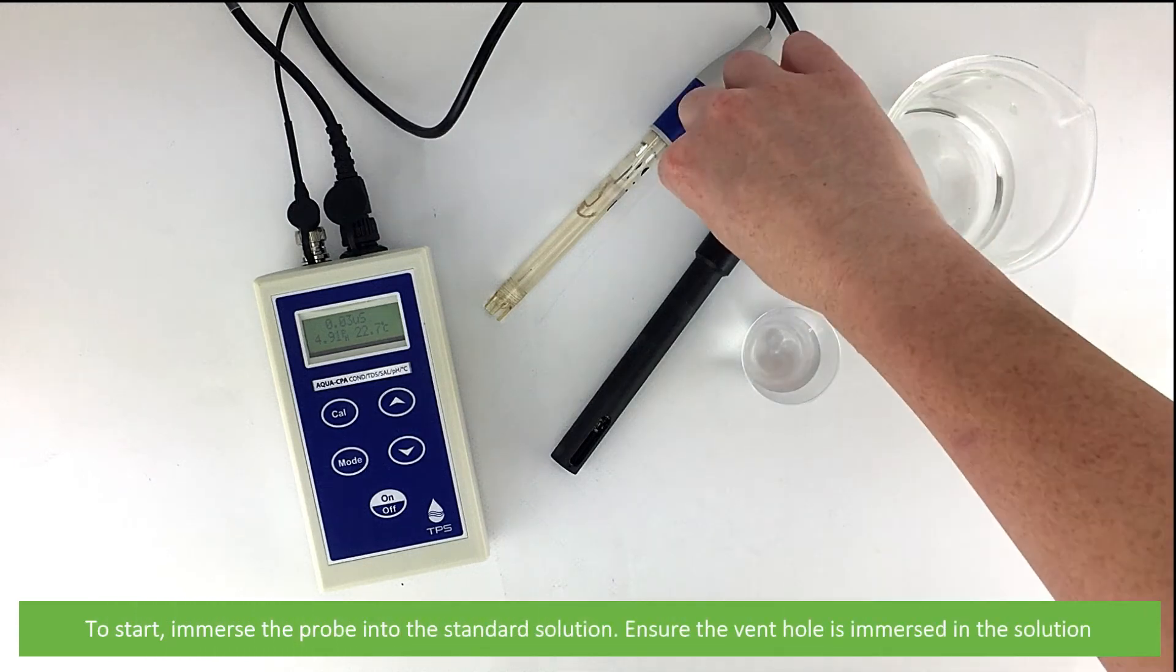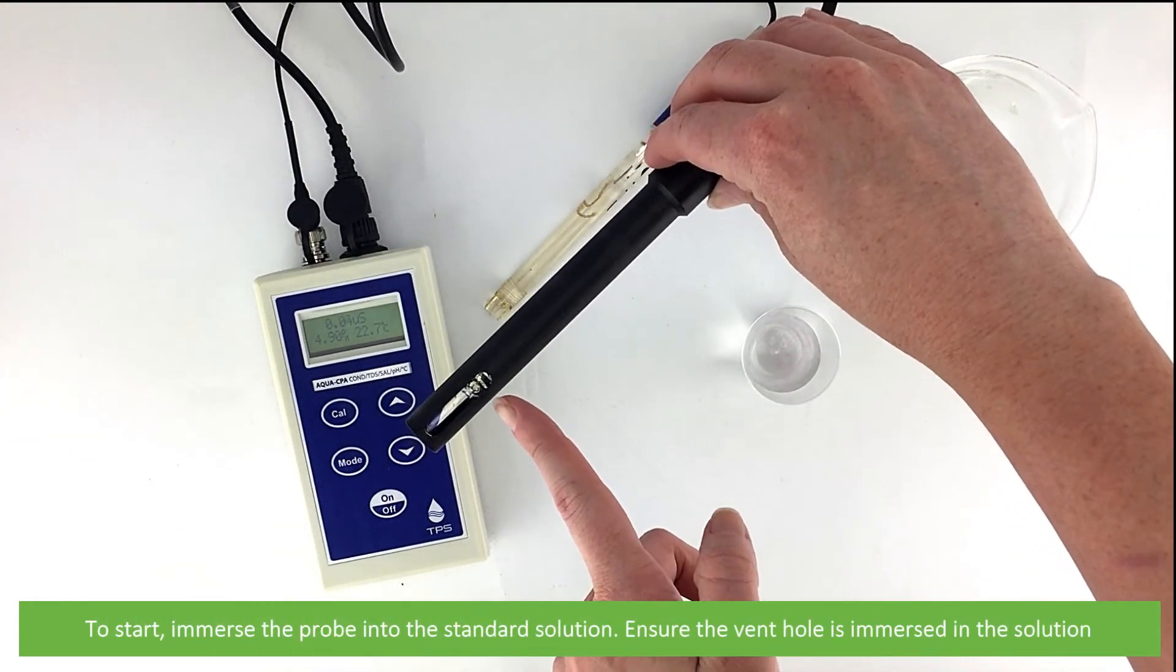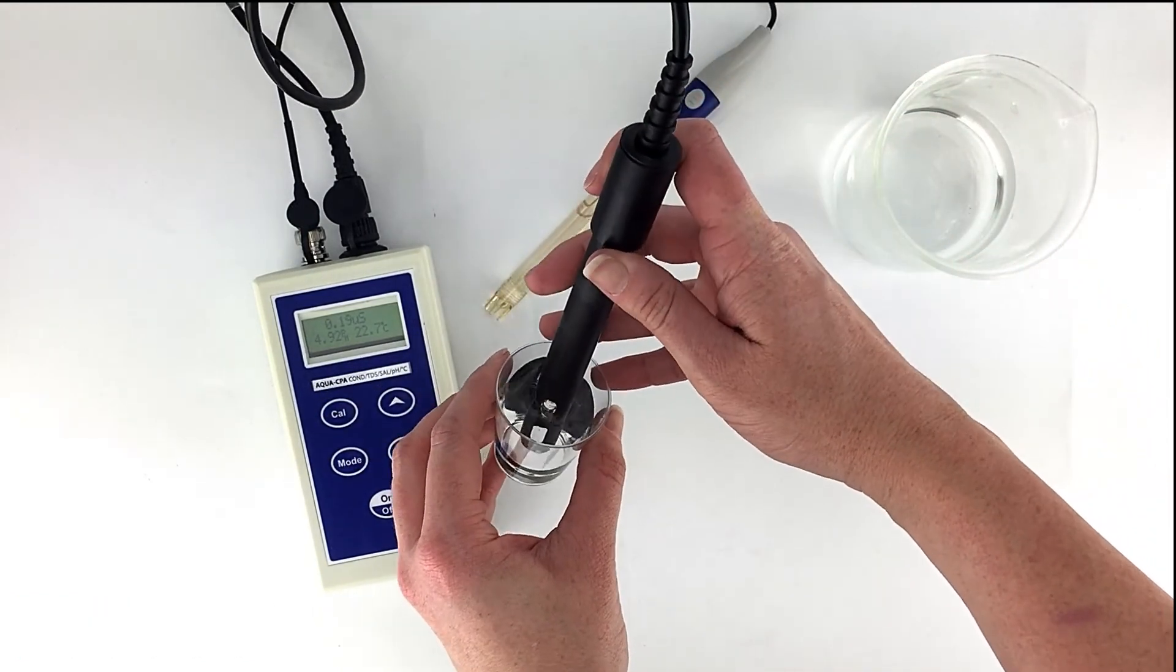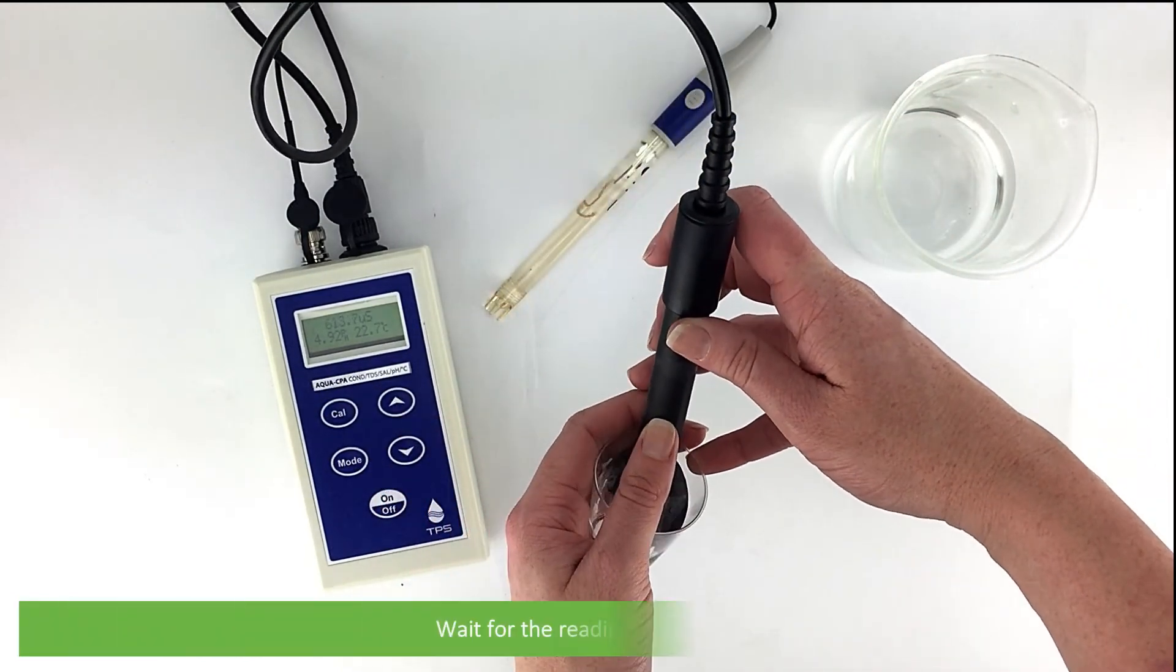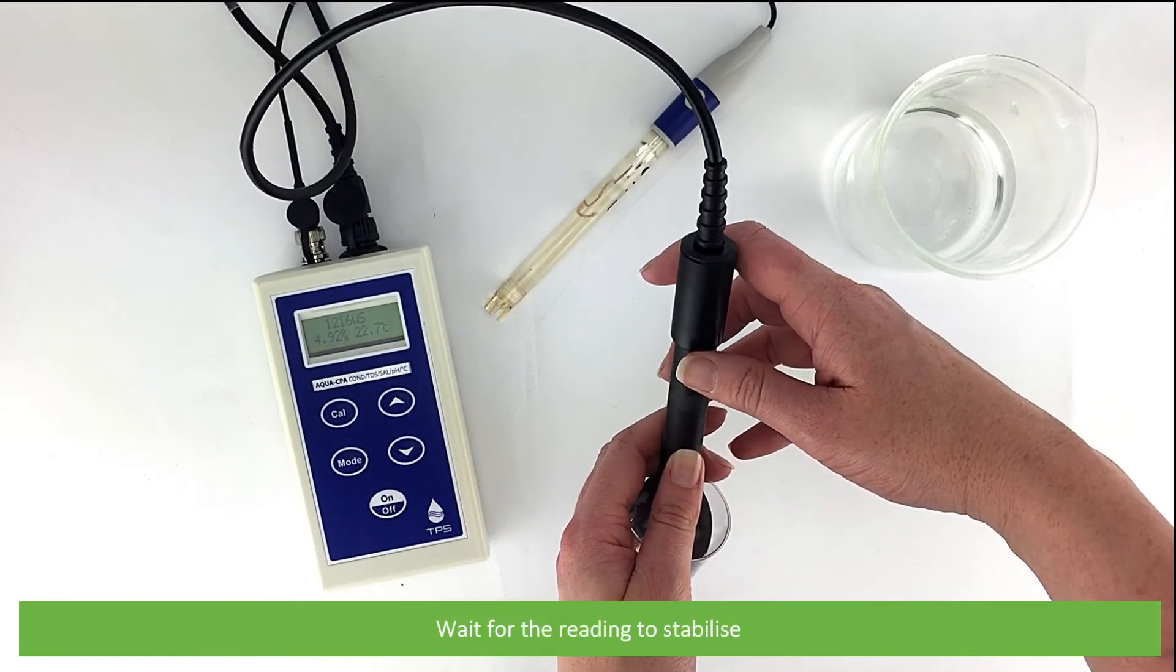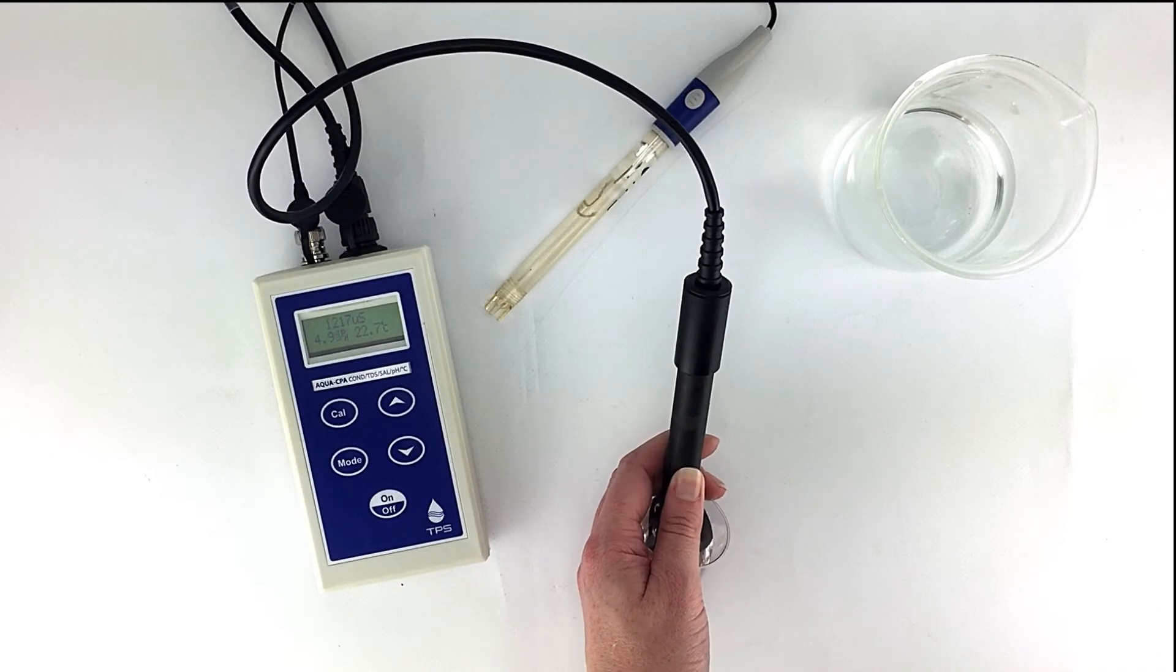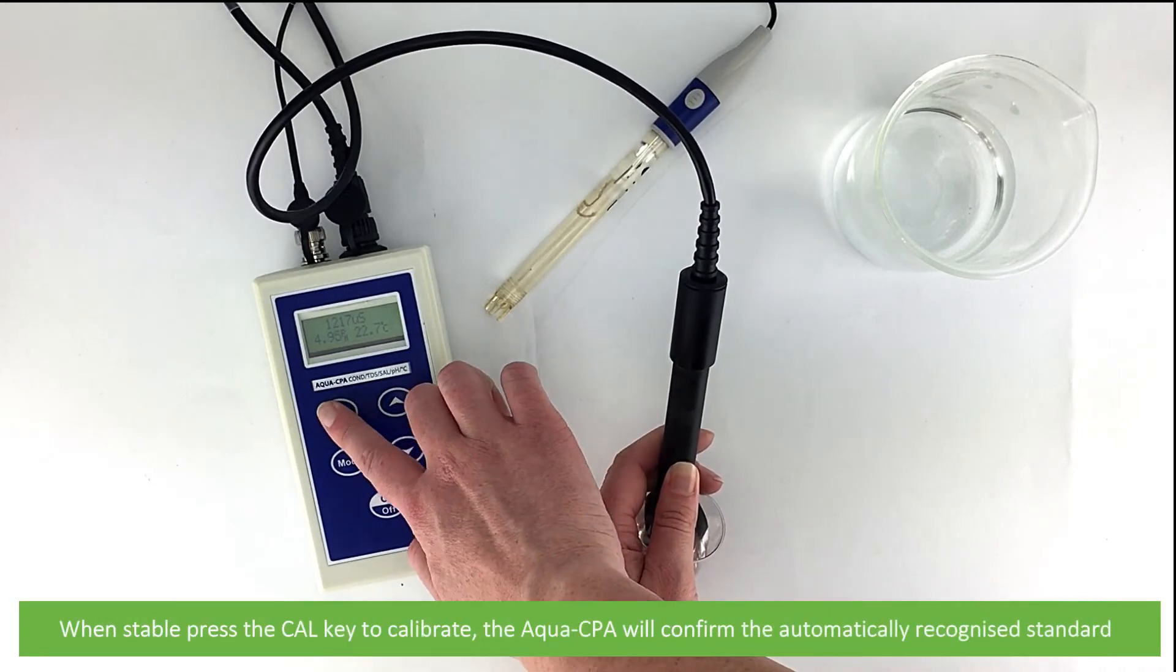Ensure that the vent hole is immersed in the solution. Wait for the reading to stabilize. Then, when stable, press the CAL key to calibrate.